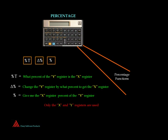The percent T says what percent of the Y register is the X register. The delta percent says how much do I have to change, or what percentage of the Y register do I have to change it by in order to get the X register. And the percent is, it says give me the X percent of the Y register. But with those three percentage function keys, you can do just about all the percentage calculations that you need to do. And again, they only happen between the X and the Y register.